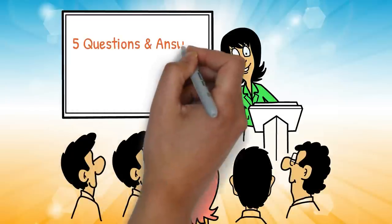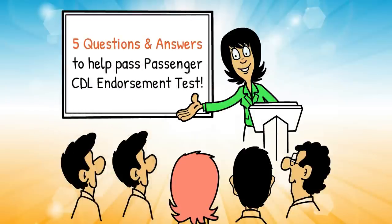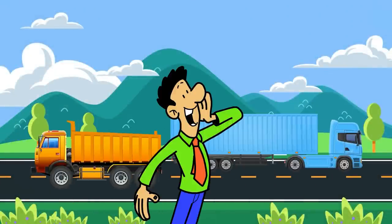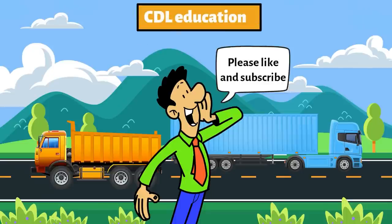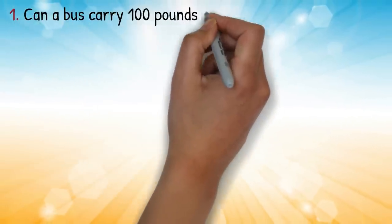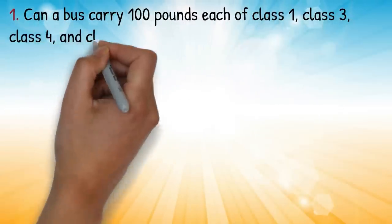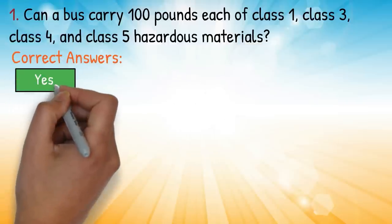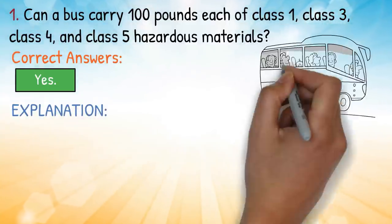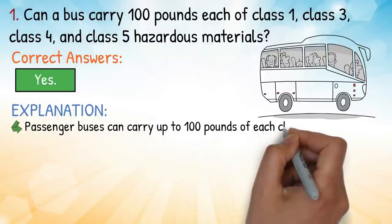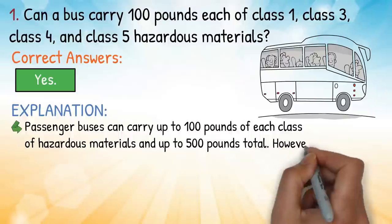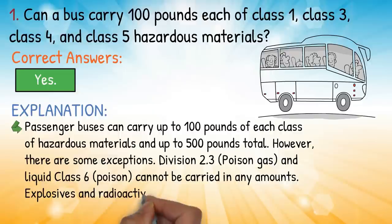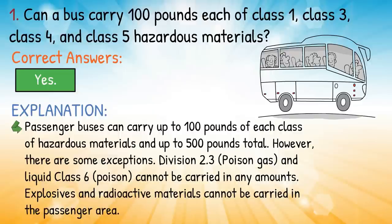Five questions and answers to help pass the passenger CDL endorsement test. Before we get started, please like and subscribe if you enjoy and would like more content about CDL education. Question one: can a bus carry 100 pounds each of class one, class three, class four, and class five hazardous materials? Correct answer: yes. Explanation: passenger buses can carry up to 100 pounds of each class of hazardous materials and up to 500 pounds total.